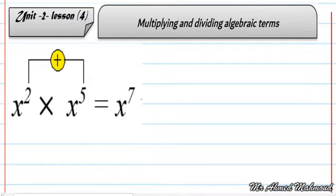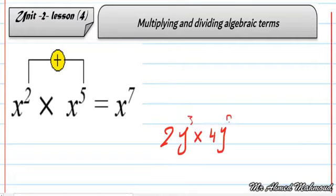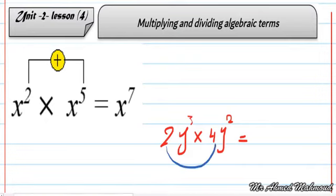For example, if we have 2y to the power of 3 multiplied by 4y to the power of 2, we are going to multiply the numbers together — 2 times 4 equals 8 — and add the powers, because we have y power 3 and y power 2, giving y to the power of 5.